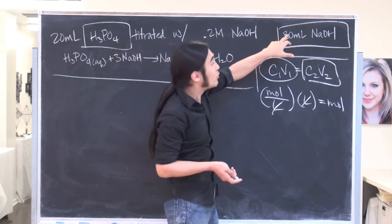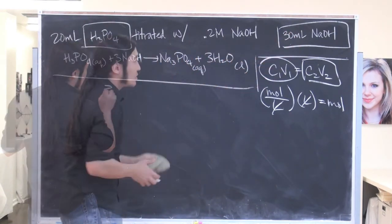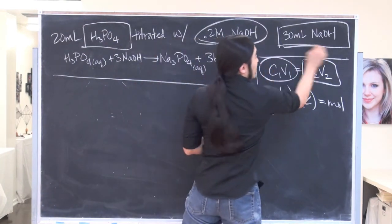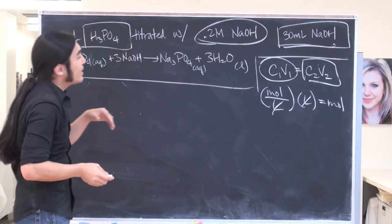So first, let's start with what we know. We know we have 30 milliliters. So let's work on what we know. We know what happens on the base side, right? We know its concentration and we know its volume. So let's put that together. And again, like I'm going to be sloppy with significant figures.